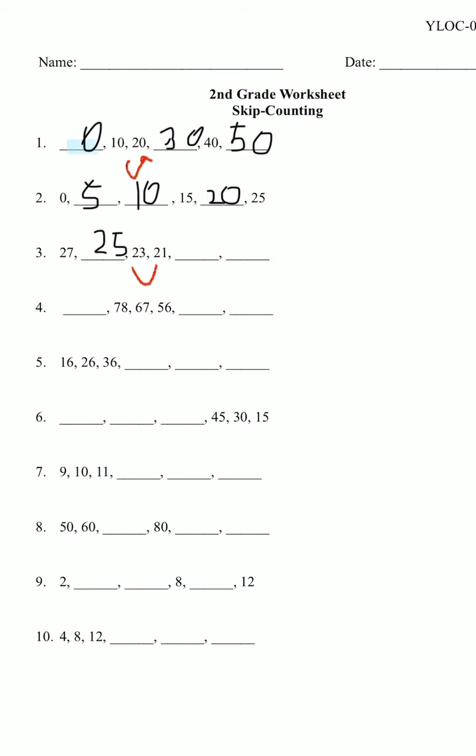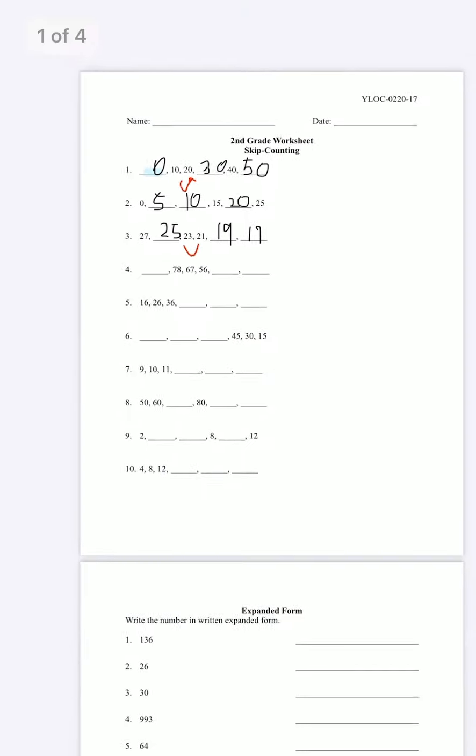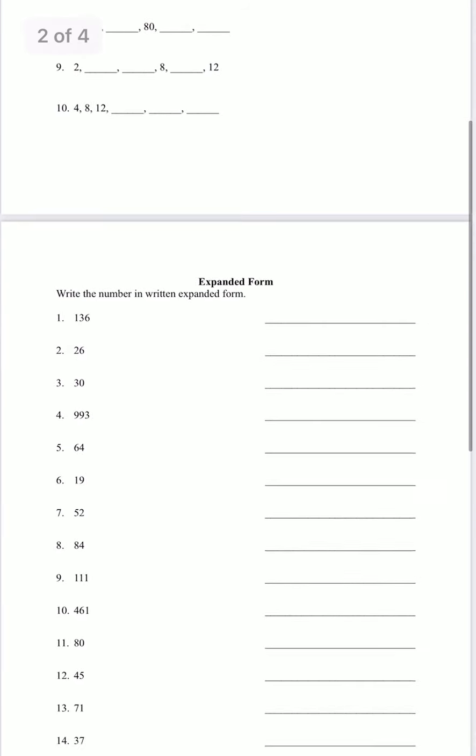And then 21 minus two. We take one, 10, and then we put it there. 11 minus two is nine. And then one drops. So we have 19. And 19 minus two is seven and one. So 17. Okay. Let's try the next page.